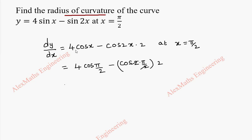Cos pi by 2 is 0, so 4 into 0, the first part is fully 0. Cos pi is minus 1 and outside we have 2. So totally this is 0 plus 2, which is 2.